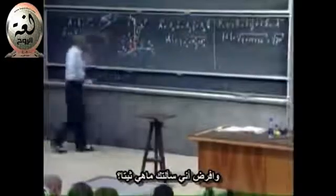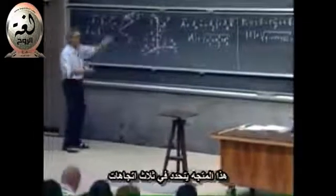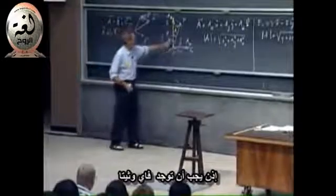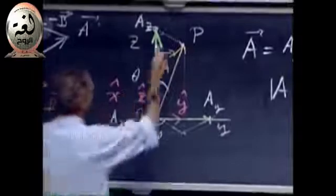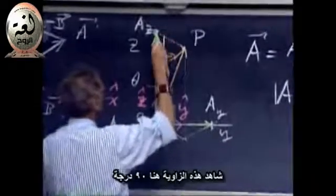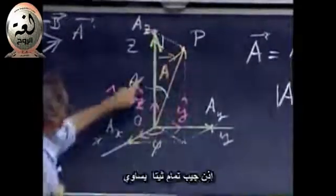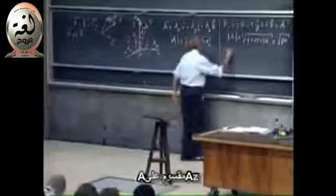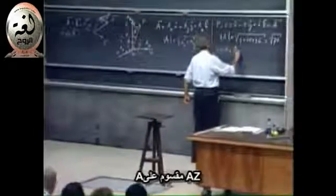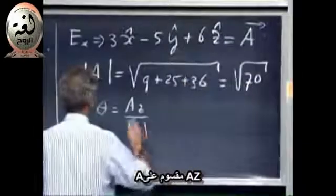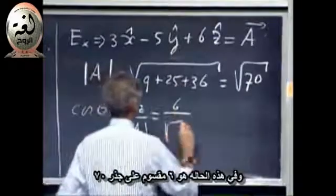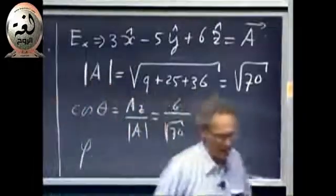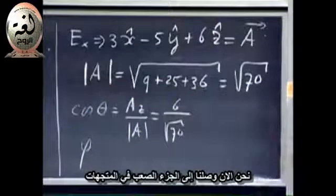And suppose I asked you, what is theta? It's uniquely determined, of course. This vector is uniquely determined in three-dimensional space, so you should be able to find phi and theta. Well, the cosine of theta... See this angle here? Ninety degrees. Projection. So the cosine of theta is A of z divided by A itself. So the cosine of theta equals A of z divided by A itself, which in our case would be six divided by the square root of seventy. And you can do phi. It's just simply a matter of manipulating some numbers.